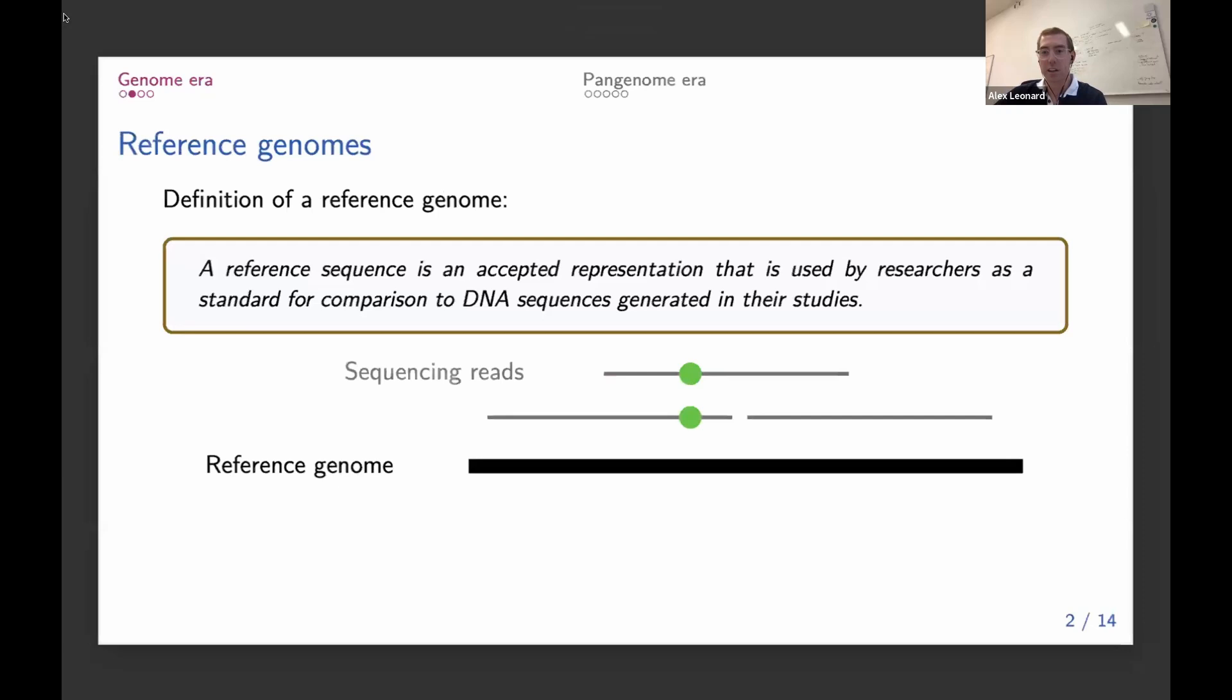This is very useful because we can then align our sequencing reads to the reference genome, and from this, we can call variants. So in this case, our sequencing reads have these two green SNPs, so we can call that there is a mutation at this point.